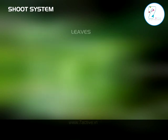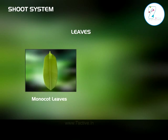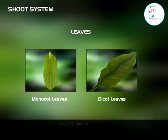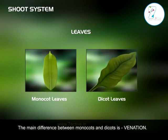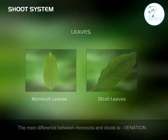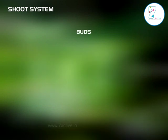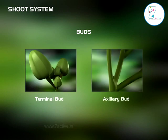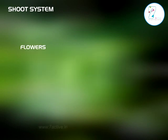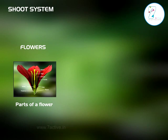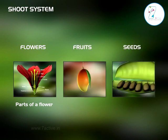Leaves: monocot leaves and dicot leaves. The main difference between monocots and dicots is venation. Buds: terminal bud and axillary bud. Flowers: parts of a flower, fruits, and seeds.